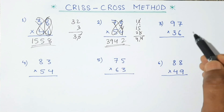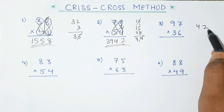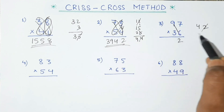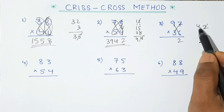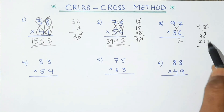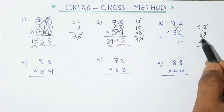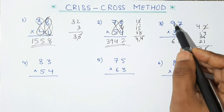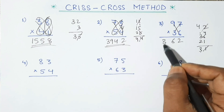Similarly, first we multiply 7 and 6: 7×6 is 42, we write only 2 and carry 4. Now cross multiply: 9×6 is 54 and 7×3 is 21. Adding with the carry 4 gives 61 — wait, 36 plus 21 plus 4 is 61 — we write 1 and carry 6. Now multiply 9×3 is 27, plus the carry gives 30. So the product of 97 and 36 is 3492.